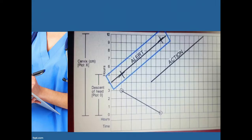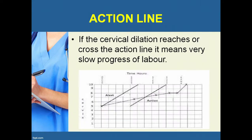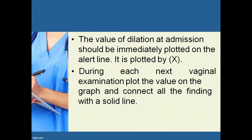If cervical dilatation is to the right of the alert line, it shows slow progress of labor and appropriate action should be taken, such as rupture of membranes. If the cervical dilatation reaches across the action line, it means very slow progress of labor.